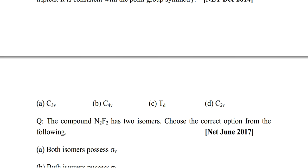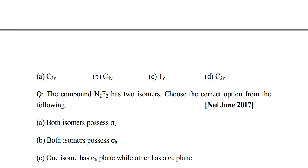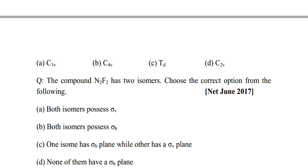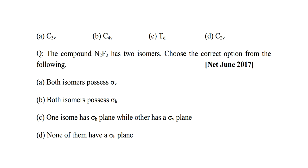Next question: the compound N2F2 has two isomers — cis and trans. Choose the correct option. Draw the structure of both isomers, identify the symmetry elements, and write down the point group, then select the correct answer. Options: (A) both isomers possess sigma_v; (B) both possess sigma_h; (C) one isomer has sigma_h while the other has sigma_v; (D) none have sigma_h. Please try by yourself — I will solve these problems in the next video. Thank you for watching, and please subscribe to my channel.